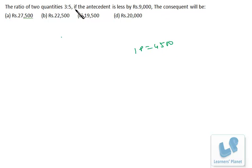Now, we are asked about consequent, that means this five parts. So if one part is 4500, five parts will be 5 into 4500, right?